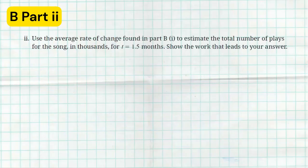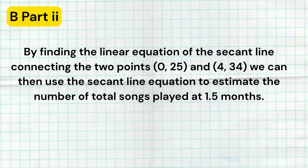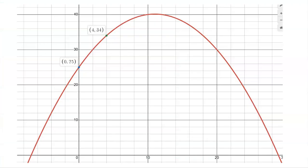All right. Part two of section B says, let's use the average rate of change found in part B to estimate the total number of plays of the song at 1.5 months. And they want us to show our work here. So here was my thinking. Hopefully this thinking makes sense. Hopefully your teacher went over this with you in class. So what we're going to do is we're going to find the linear equation of the secant line that connects these two points. We could then use the secant line equation to estimate the number of total plays at 1.5 months. So here is that actual little graph. I made a graph from Desmos of the model, and we actually see these two points. And what I want to do is find the equation of the secant line connecting those two lines.